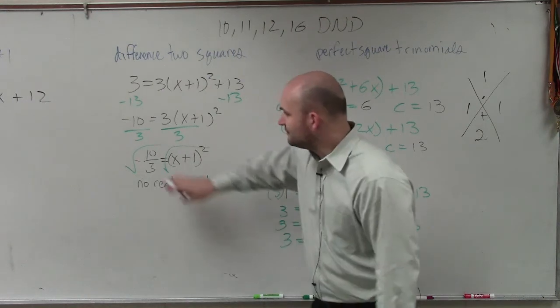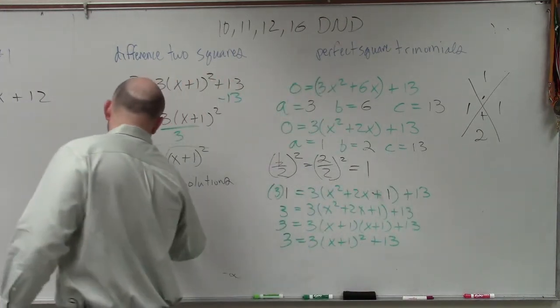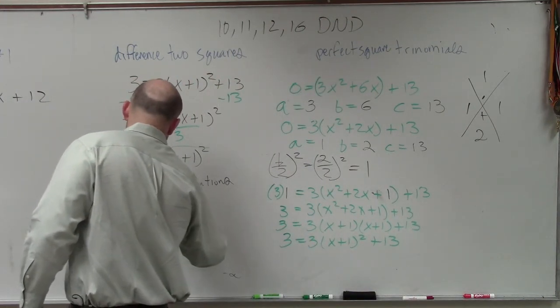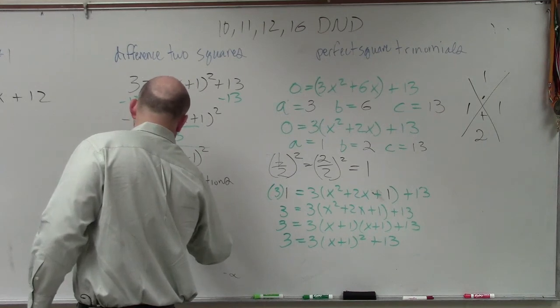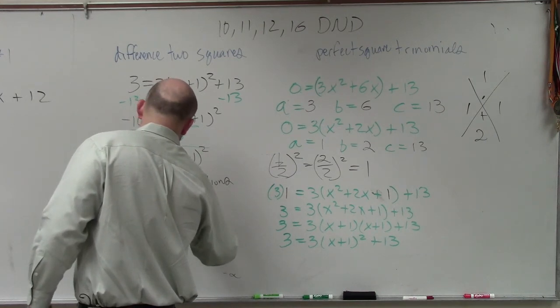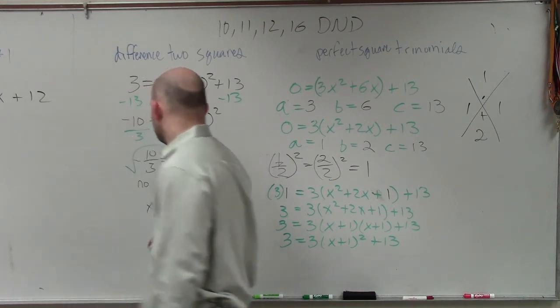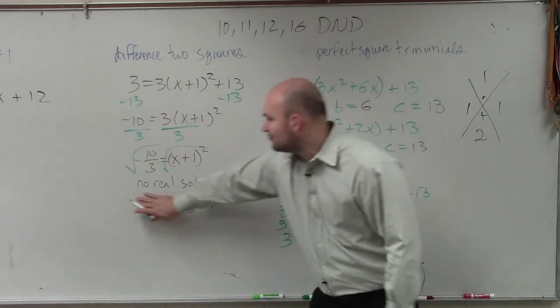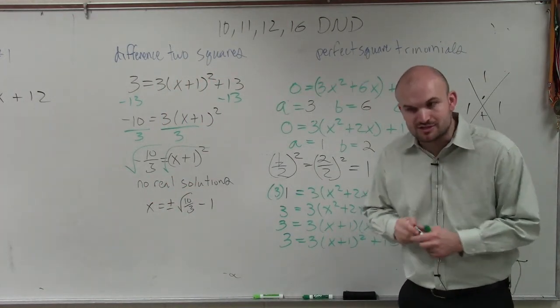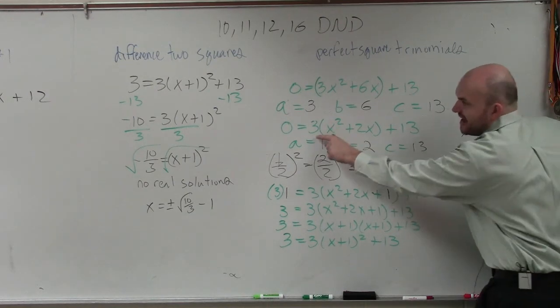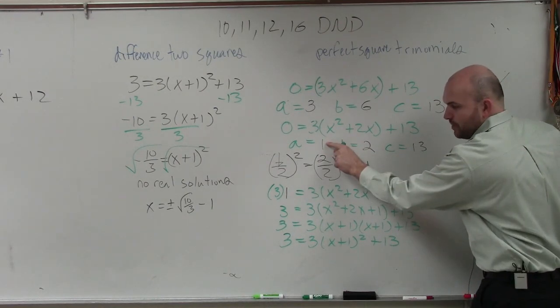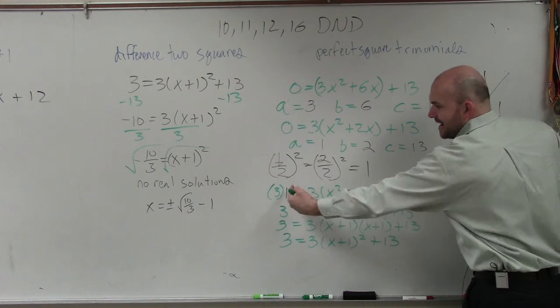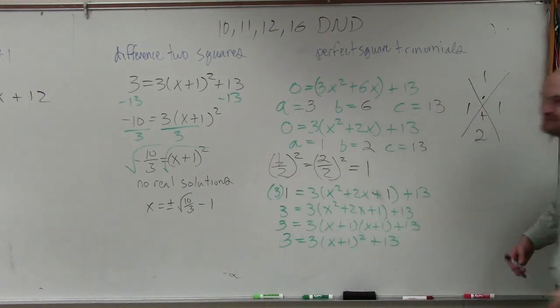And if that wasn't negative, if this was positive, then the answer would look like this: x equals plus or minus square root of 10 thirds minus 1. That's if it was positive. But for right now, I'd just like you to write no real solutions. So the main important thing, guys, is factoring this out so that A equals 1. And then, since you factor that out, whenever you add it to the other side, you also have to multiply that number.